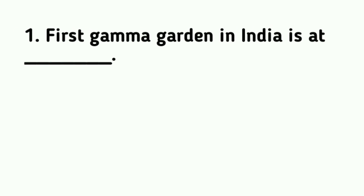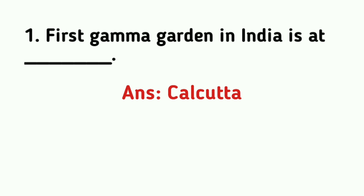The first Gamma Garden in India is at Calcutta.